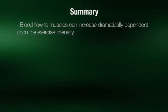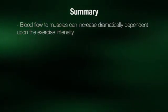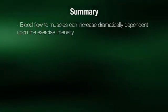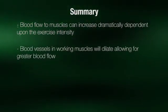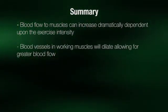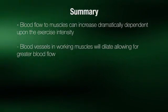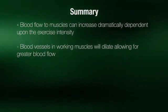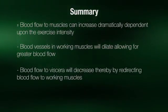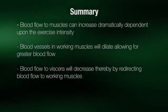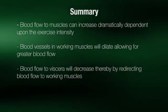In summary, blood flow to muscles can increase dramatically dependent upon the exercise intensity. Blood vessels in working muscles will dilate, allowing for greater blood flow. Blood flow to other organs will decrease, thereby redirecting blood flow to working muscles. Endurance training results in improvements in all components of the Fick equation.